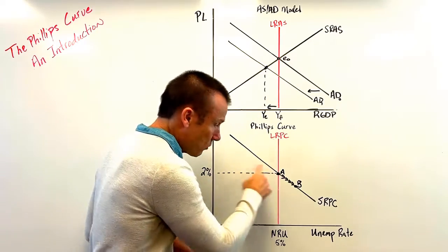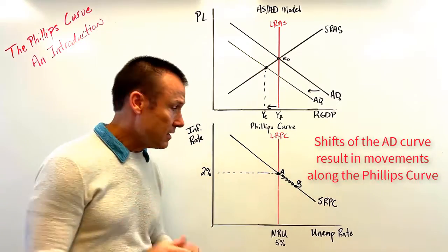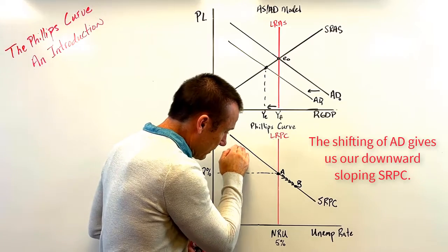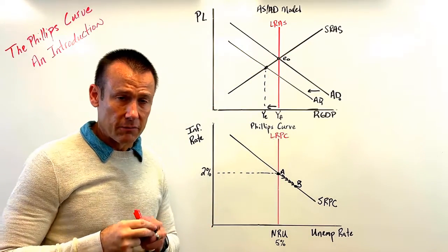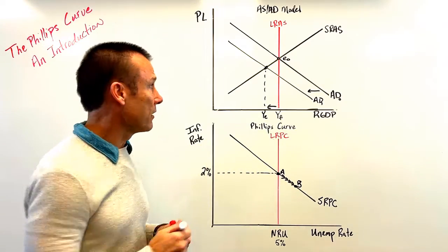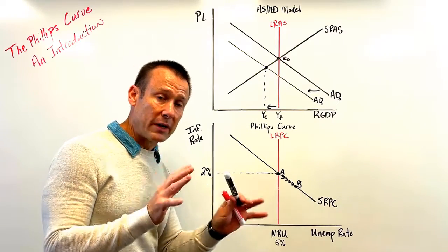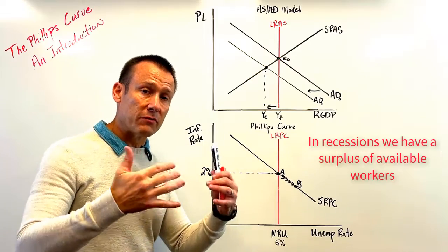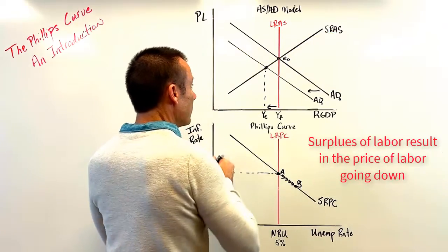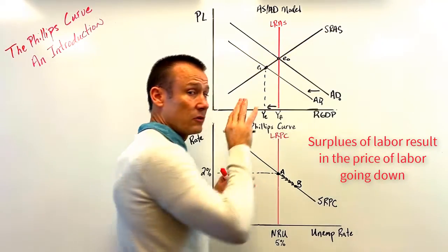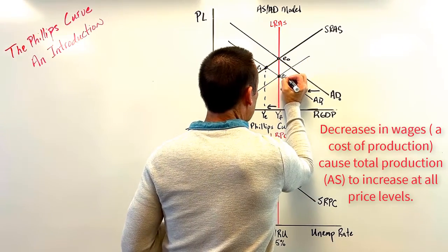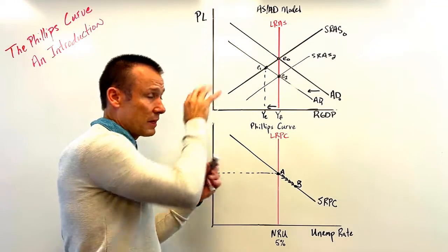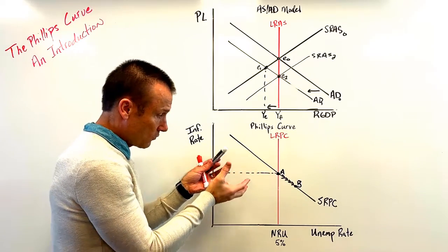When AD shifts, we move along the SRPC — that downward-sloping shape reflects AD's instability. In the long run, if we don't intervene and wait for wages to fully adjust: since we have positive cyclical unemployment and a surplus of available workers, wages eventually go down. When wages go down, that shifts the SRAS curve to the right, bringing us to a new equilibrium — E sub two.